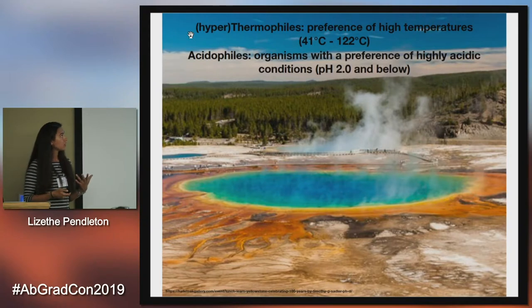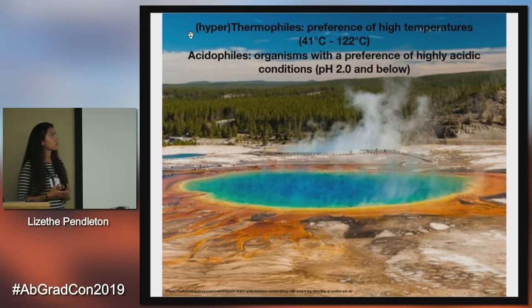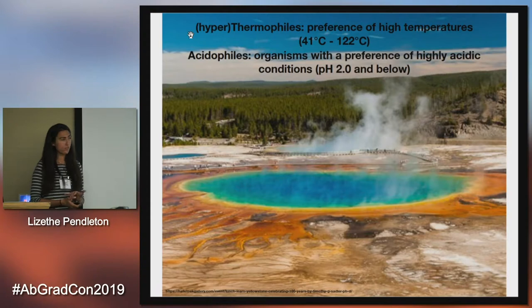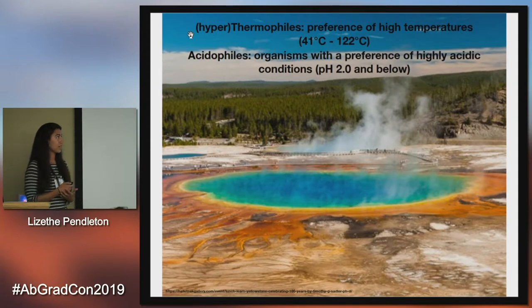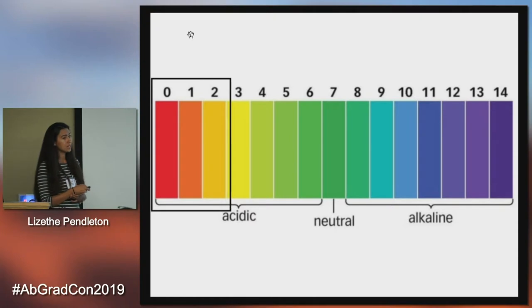Thermophiles are organisms with a preference for high temperatures ranging from 41 to 122 degrees Celsius. Acidophiles are organisms that prefer highly acidic environments. This is an example of the Yellowstone National Park hot spring, which is both very hot and very acidic. The pH scale ranges from 0 to 6 for acidic, 7 is neutral, and 8 to 14 is alkaline. Acidophiles are over in the acidic region, preferring high acidity.